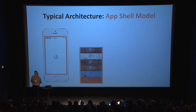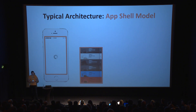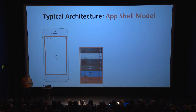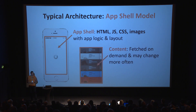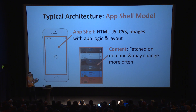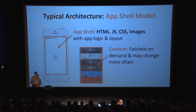The typical web application architecture for PWAs is called the app shell model. You split your application into two parts: all the assets and basic structure — the app shell, which is your HTML, CSS, and JavaScript defining your application logic — and then the dynamic data you get on demand. The reason for the split is that you can cache the app shell very well, so you always have the basic layout, and then only the content needs to be fetched over the network.